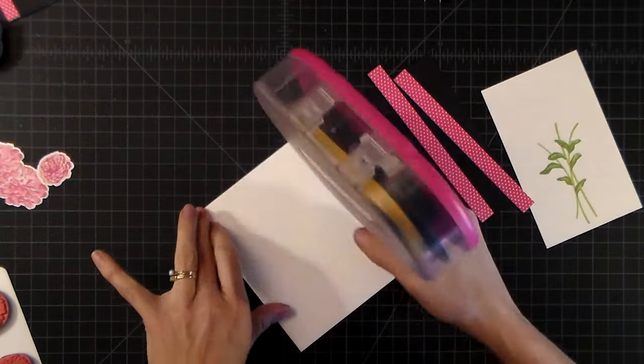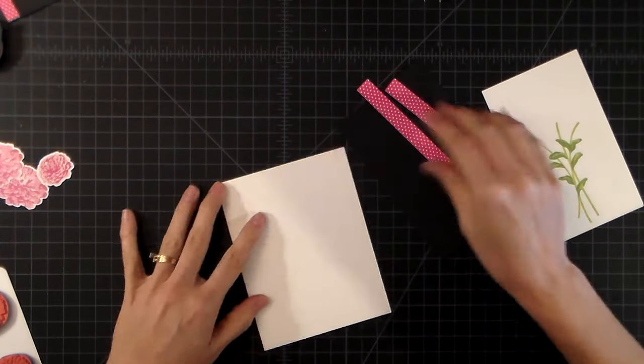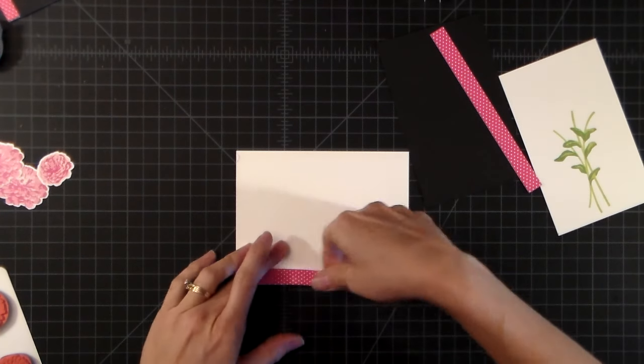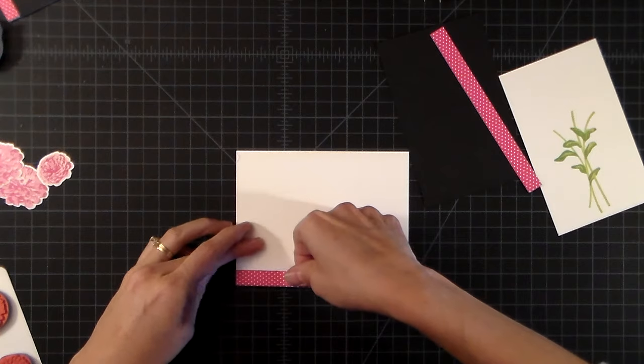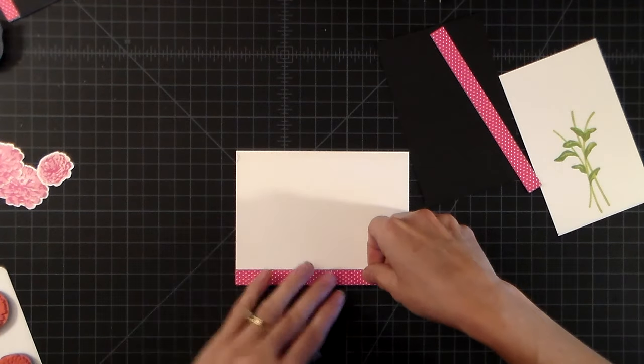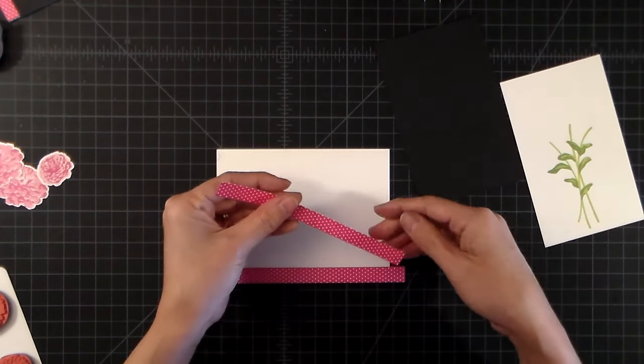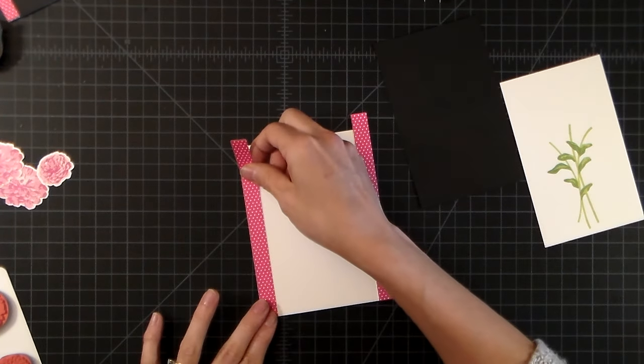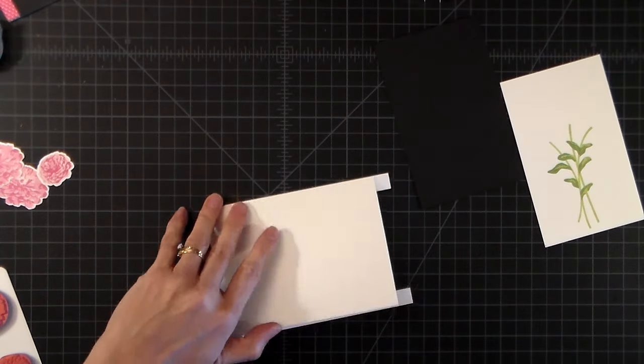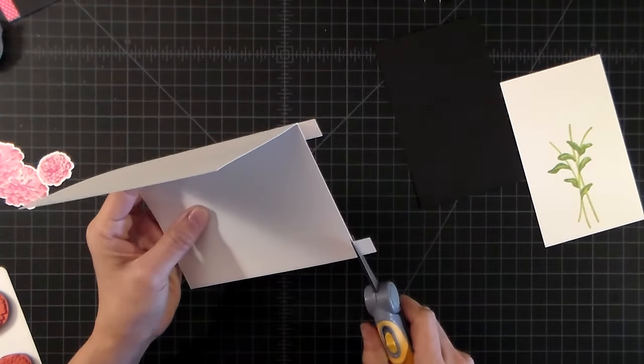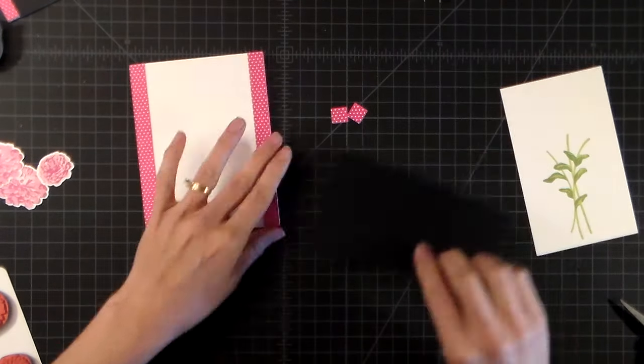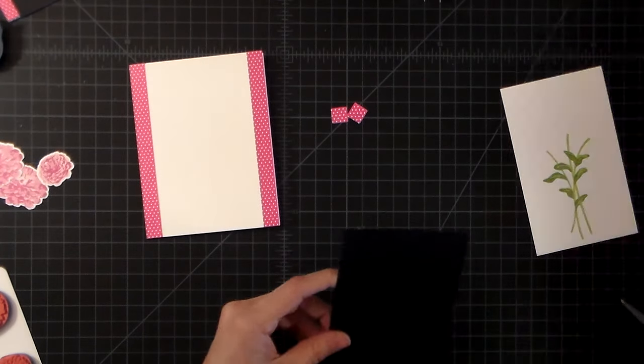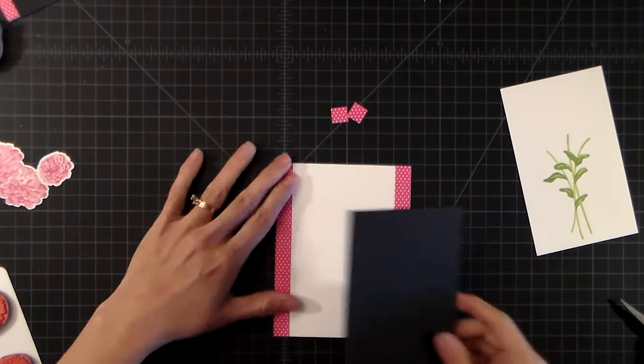Now that all the stamping is done except for the sentiment, I'm going to add my pattern paper. This is from the Rainbow Brights pattern paper from Tailored Expressions and I just picked a pink polka dot that matches the Lollipop ink that I used on my card. And the reason why I am adding this is so that I can get my placement that way I know where to add my sentiment in a little bit.